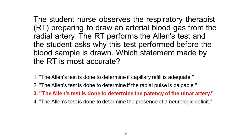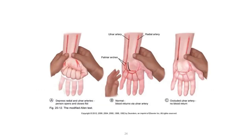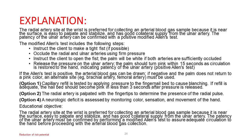Correct answer. The radial artery site at the wrist is preferred for collecting an arterial blood gas sample because it is near the surface, easy to palpate and stabilize, and has good collateral supply from the ulnar artery. The patency of the ulnar artery can be confirmed with a positive modified Allen's test.